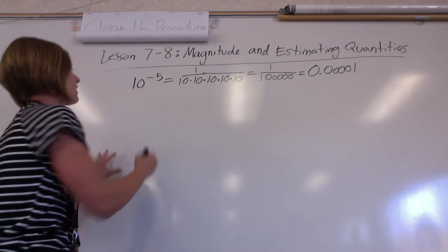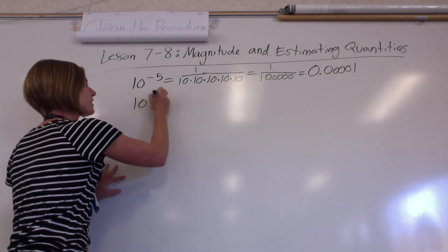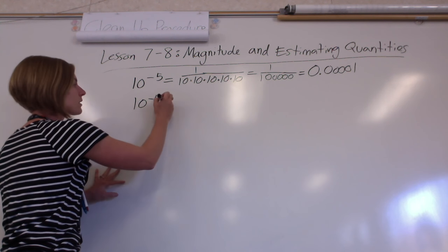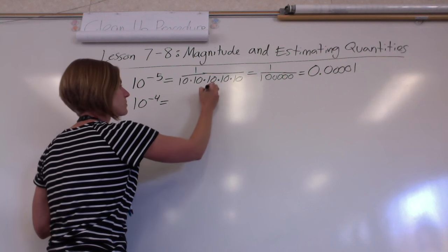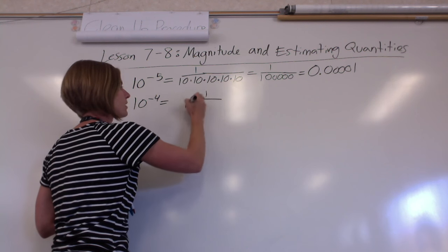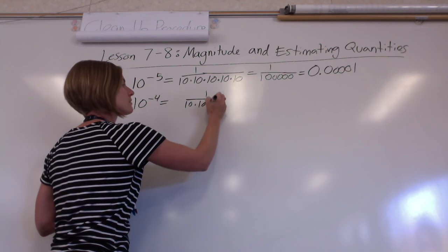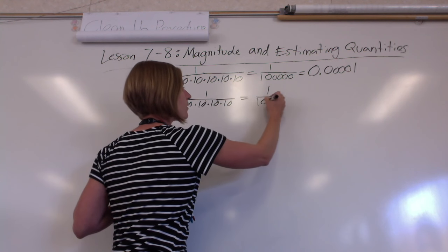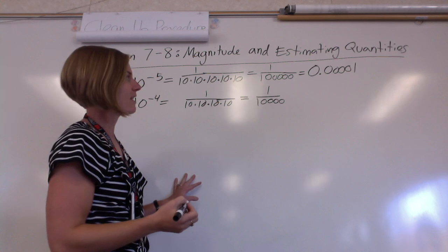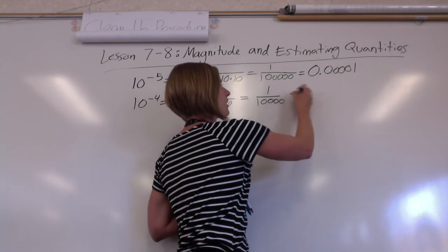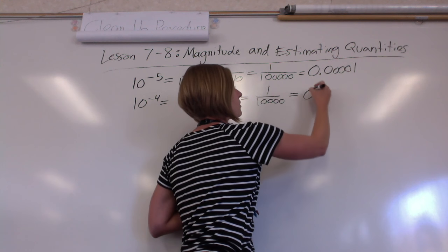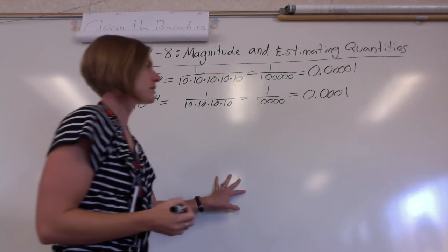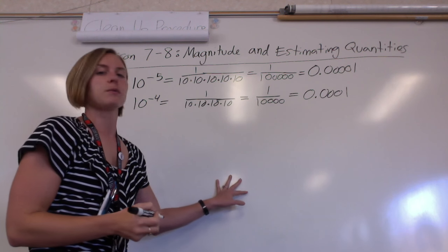Let's try 10 to a negative 4, which we know is 1 over four tens. So that's 1 over ten thousand, and that's going to equal three zeros and then a one.